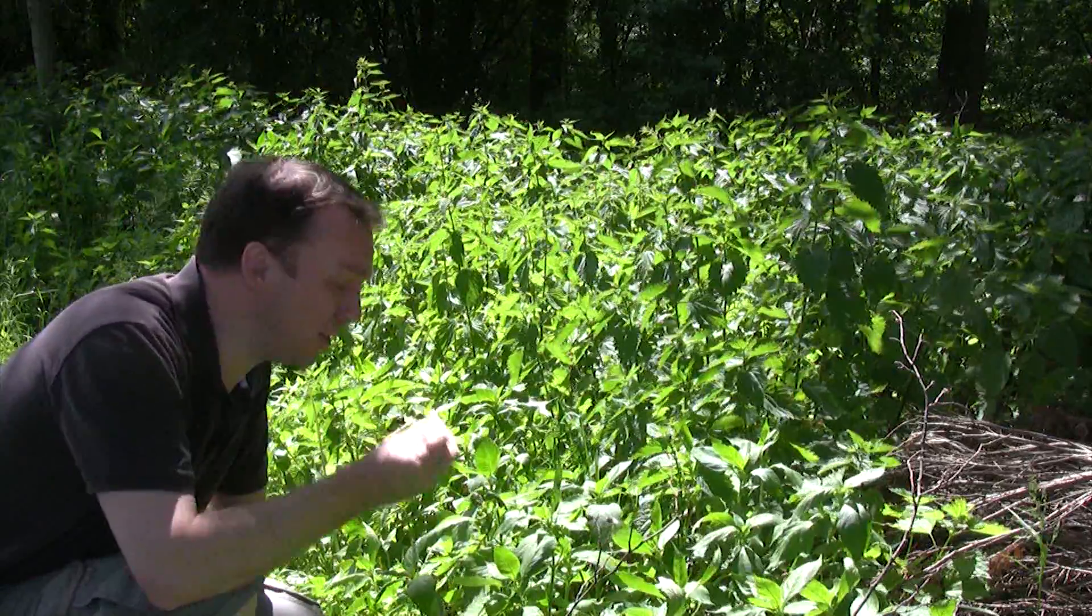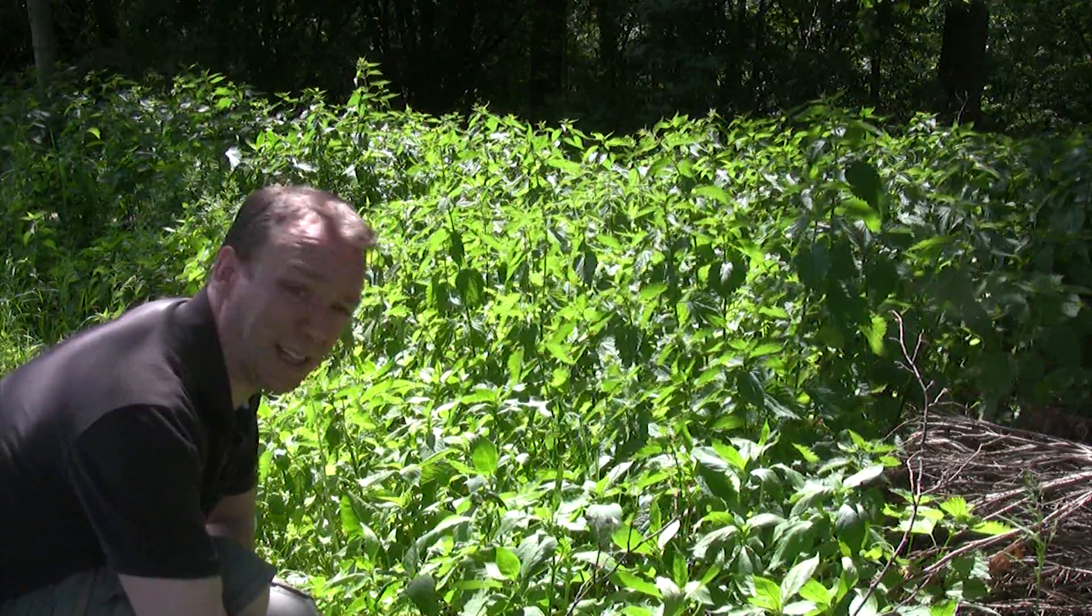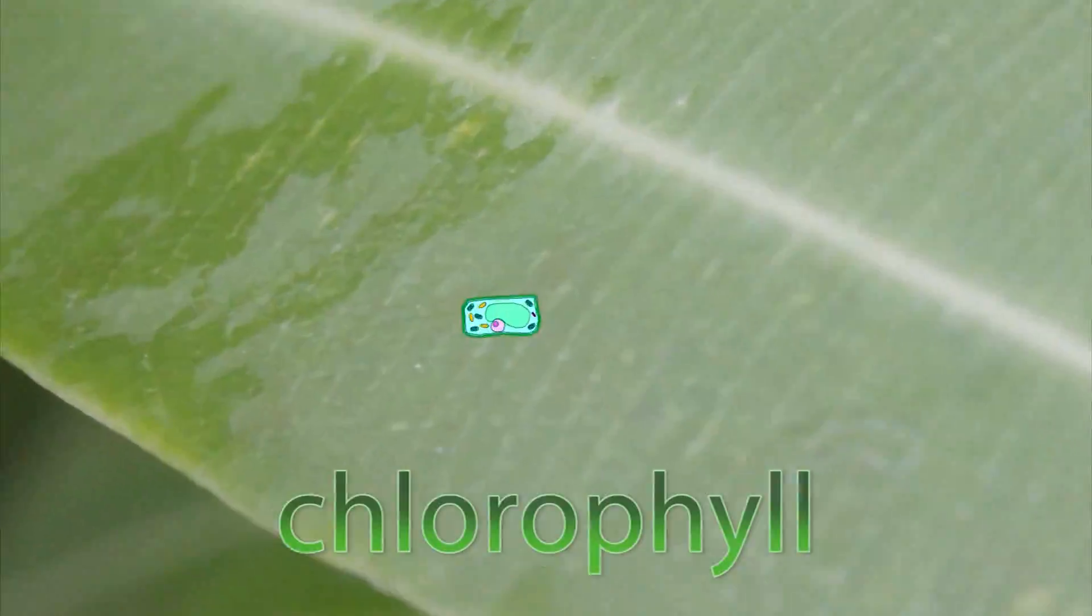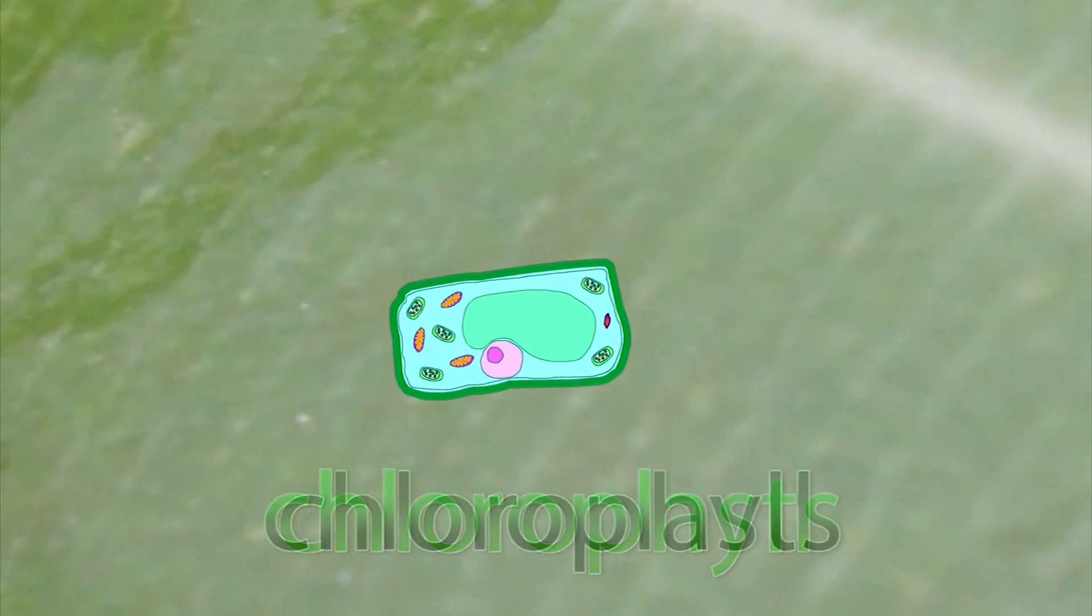The light energy is converted into chemical energy by chlorophyll in the leaves. Chlorophyll is the green pigment found in chloroplasts.